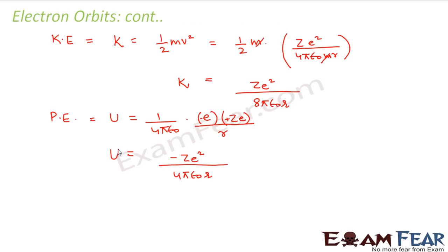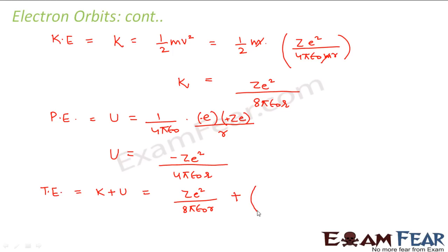Now that we have calculated kinetic energy as well as potential energy, we can calculate the total energy. Total energy equals kinetic energy plus potential energy: Ze squared over 8 pi epsilon naught R, plus minus Ze squared over 4 pi epsilon naught R. This comes out to be minus Ze squared divided by 8 pi epsilon naught R.